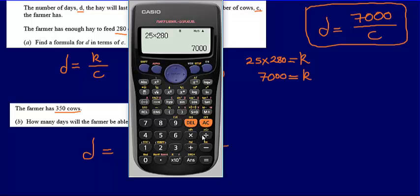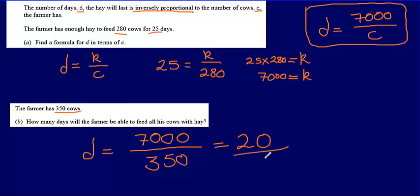And that is going to give us an answer of 20. So how many days will the farmer be able to feed all his cows with hay? If he's got 350 cows, he'll be able to feed them for 20 days.